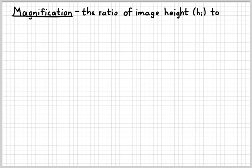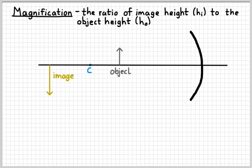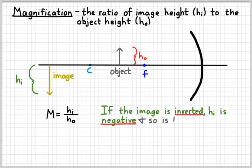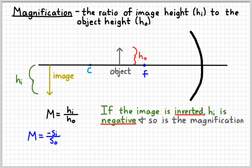Another important equation is the magnification equation. Magnification refers to the ratio of the image height to the object height: M equals H-I over H-O. The bigger the difference, the bigger the magnification. If we have an inverted image, the image height is negative and magnification will be negative as well. We can also relate magnification to distances: magnification equals negative S-I over S-O. Setting H-I over H-O equal to negative S-I over S-O is how we'll typically use that relationship.